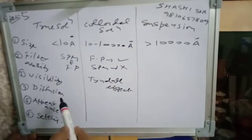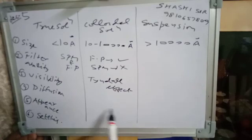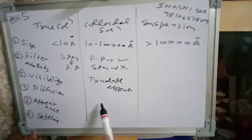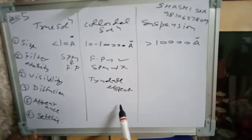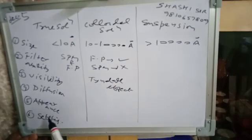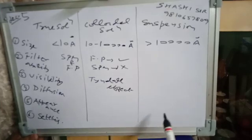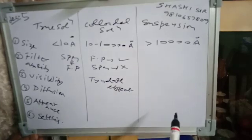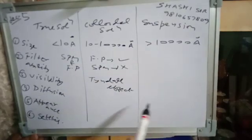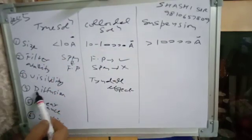On the basis of appearance: true solution is clear and transparent, colloidal solution is translucent, and suspension is opaque. On the basis of settling: true solution is stable and does not settle, colloidal solution is stable, and suspension particles settle on standing.